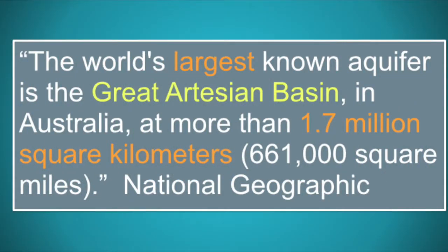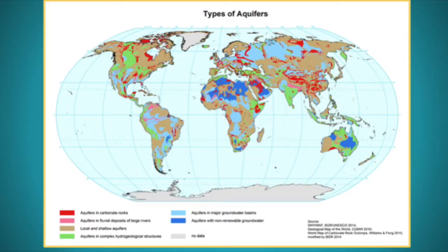Aquifers come in a wide range of sizes, varying from a few meters deep to thousands of meters. They also cover vastly different areas, ranging from a few hundred acres to thousands of square kilometers. Water can remain in an aquifer for a time of two weeks to ten thousand years, and sometimes longer.